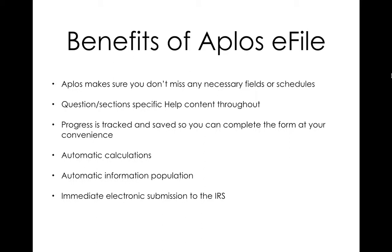Lastly, we have immediate electronic submission to the IRS. Once you finish this return, if you choose to e-file — you can also choose to print and mail it — that is submitted very shortly after you click that button. As soon as the IRS receives it, they'll send it back whether it was accepted or rejected. If it is rejected, we will get some feedback as to why, and then you can go in, make the changes, and resubmit. So you can always go back and make changes until it's perfect for the IRS.